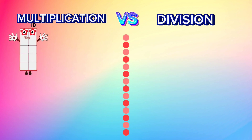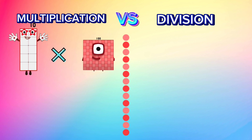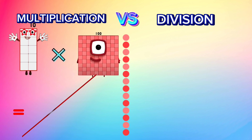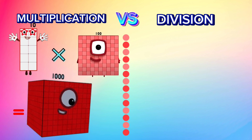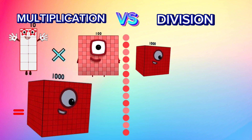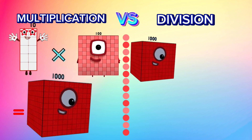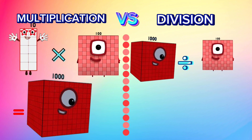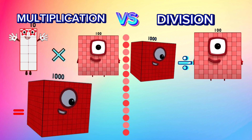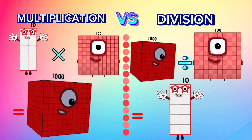10 multiplied by 100 is equal to 1,000. Let's compare it with division: 1,000 divided by 100 is equal to 10.